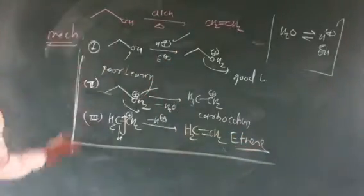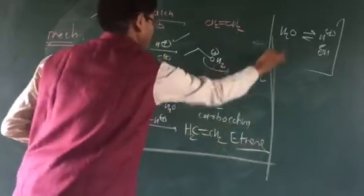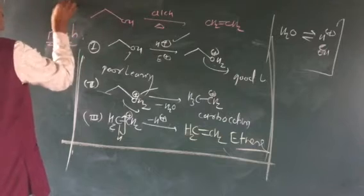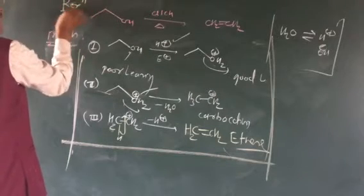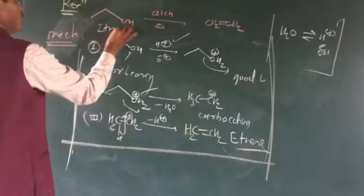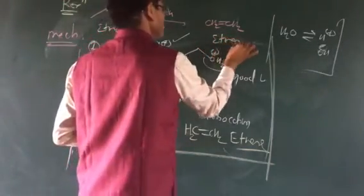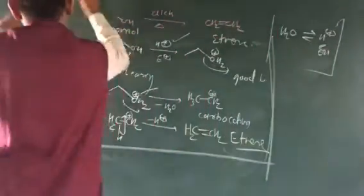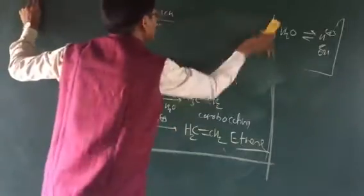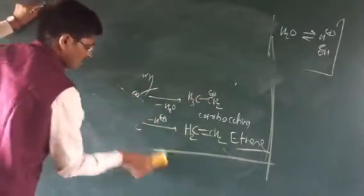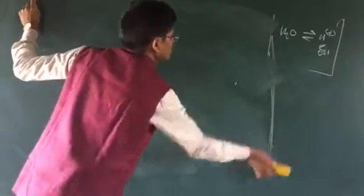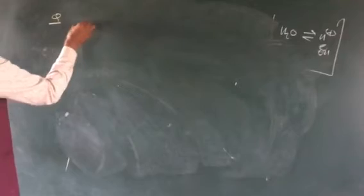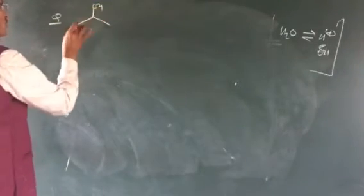This is the mechanism of the reaction - ethyl alcohol to ethylene. This is one of the reactions: ethanol to ethene. This is the preparation method. In your exams, this type of question can be asked. For example, isopropyl alcohol can be given as the starting material in computer-based and board exams.